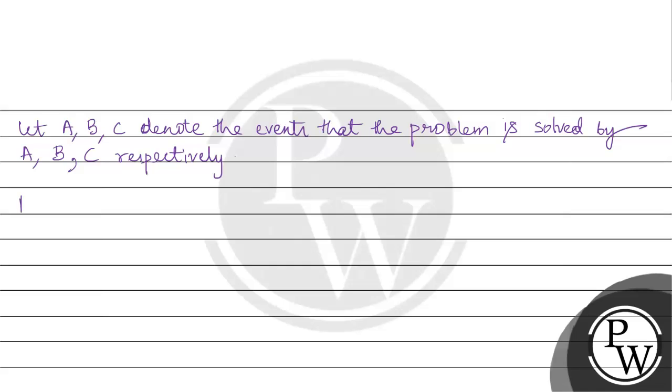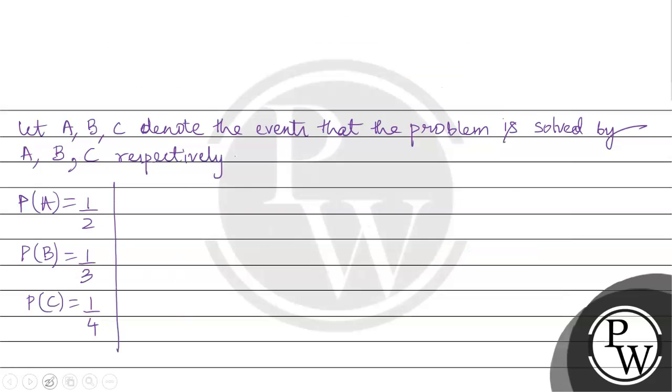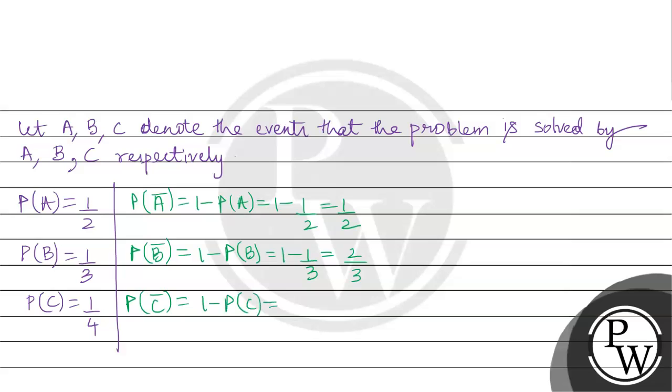Therefore, probability of A as given in the question is 1 by 2, probability of B is 1 by 3, probability of C is 1 by 4. Next, probability of A bar is 1 minus 1 by 2, that is half. Probability of B bar is 1 minus 1 by 3, that is 2 by 3. Probability of C bar is 1 minus 1 by 4, that is 3 by 4.